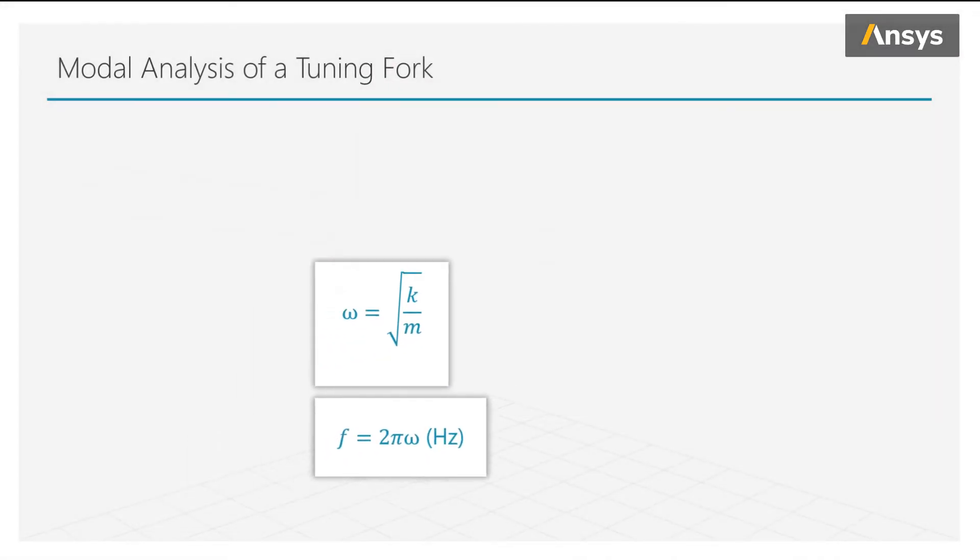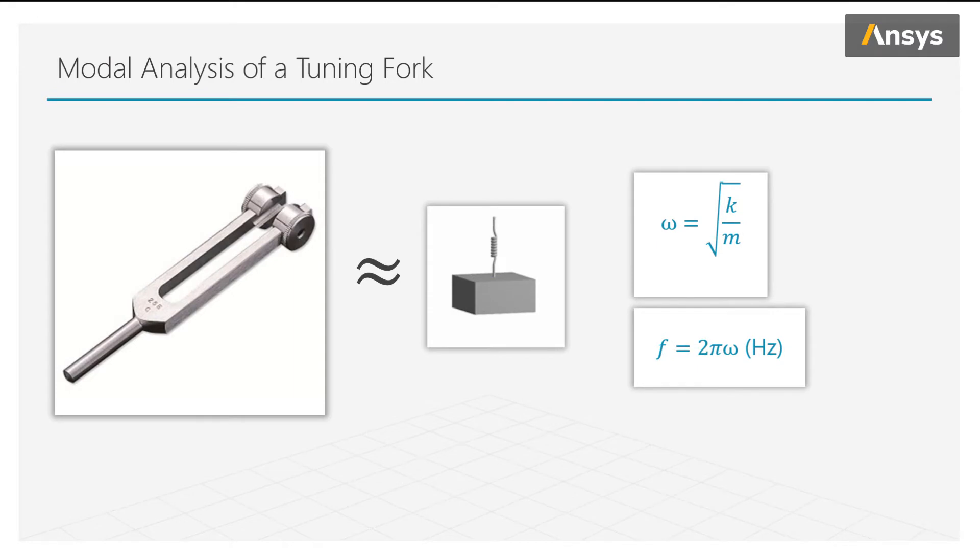Now we ask the question, what happens if we were to add weight to the tips of the fork? Again, thinking of the tuning fork as a cantilever beam, it acts like a spring. A longer beam we just learned is softer, shorter is stiffer. Now putting a mass on the tip of that beam, or spring, we see from our equation that if we increase the mass, the resulting frequency will decrease.